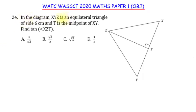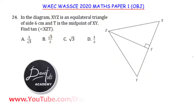In the diagram, XYZ is an equilateral triangle of side 6 cm and T is the midpoint of XY. We have to find the tangent of angle XZT.